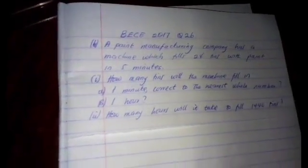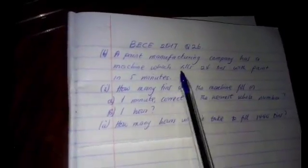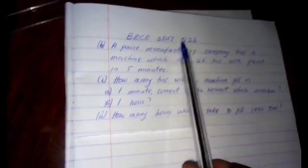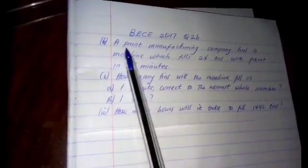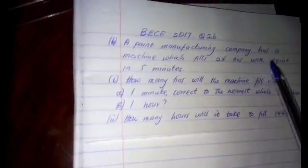Hello dear viewers, this is the solution to 2017 BC question 2b. A paint manufacturing company has a machine which fills 24 tins with paint in five minutes.